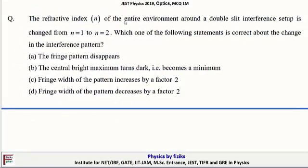We are discussing JEE Physics 2019 optics problems. The first is an MCQ of 1 mark. The refractive index n of the entire environment around a double slit interference setup is changed from n=1 to n=2. Which one of the following statements is correct about the change in the interference pattern?